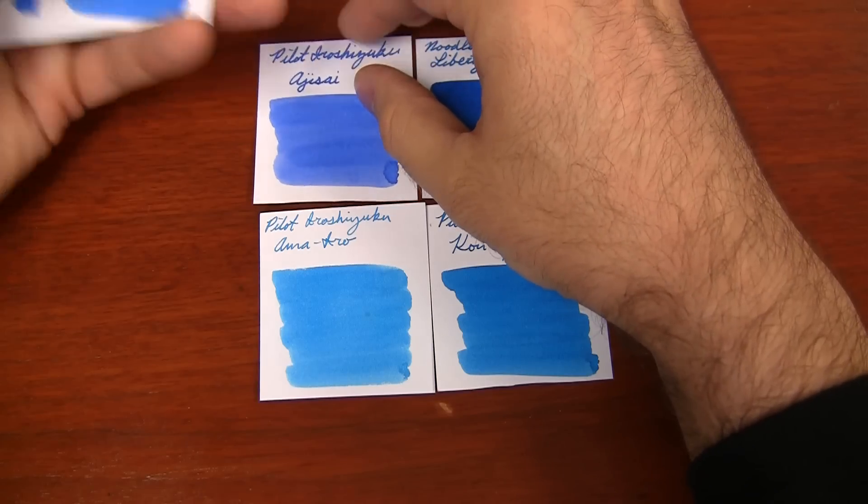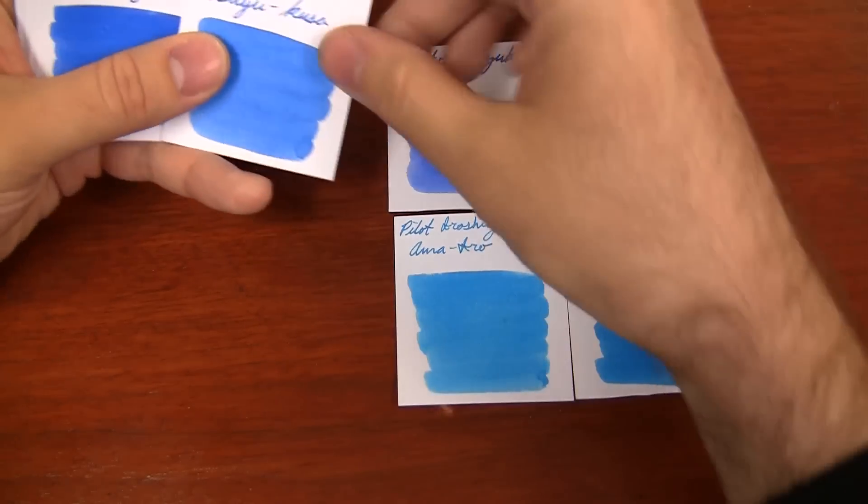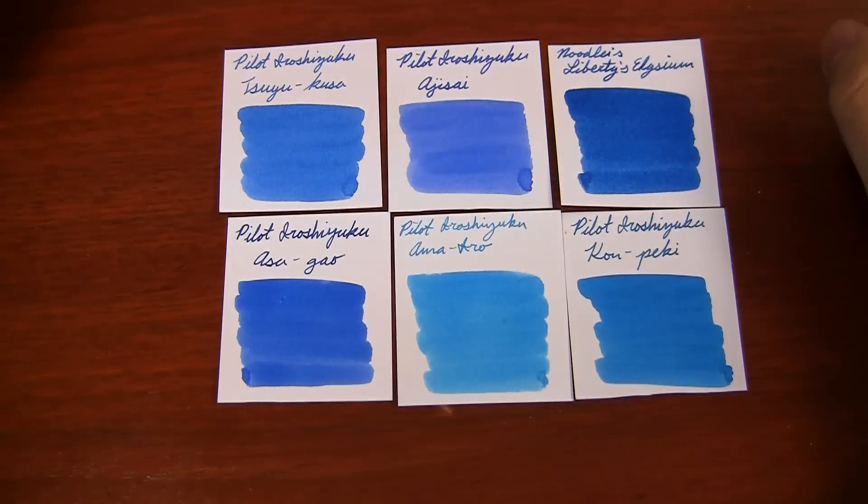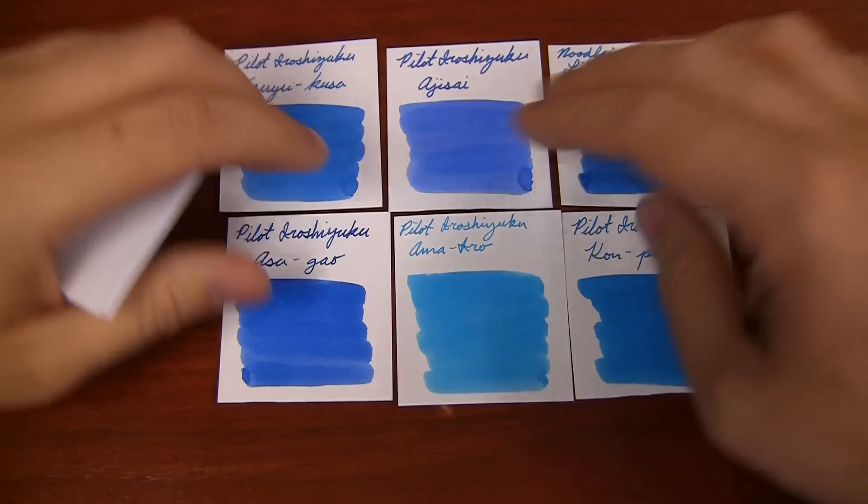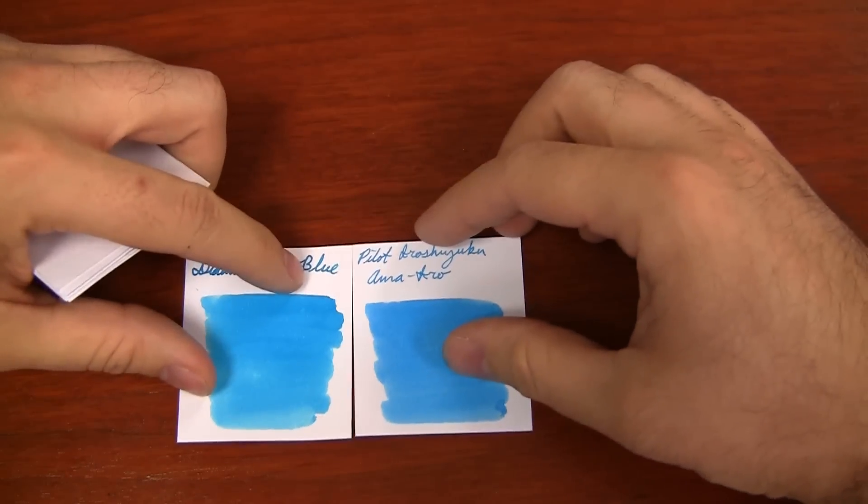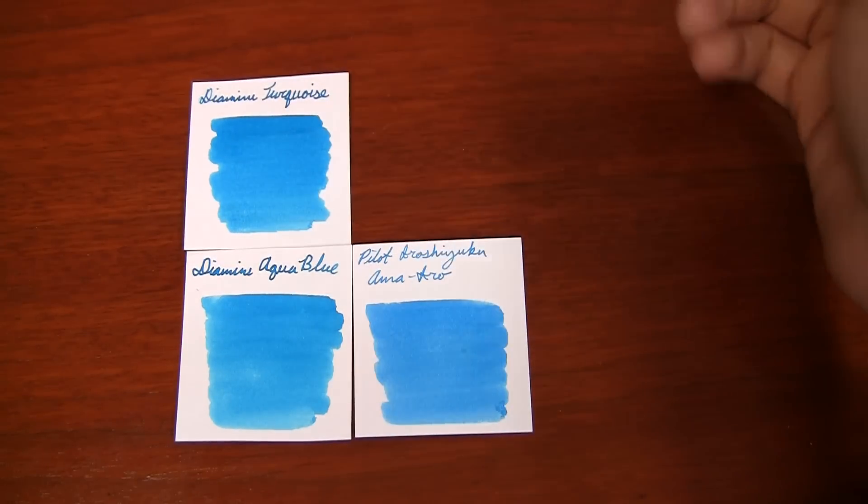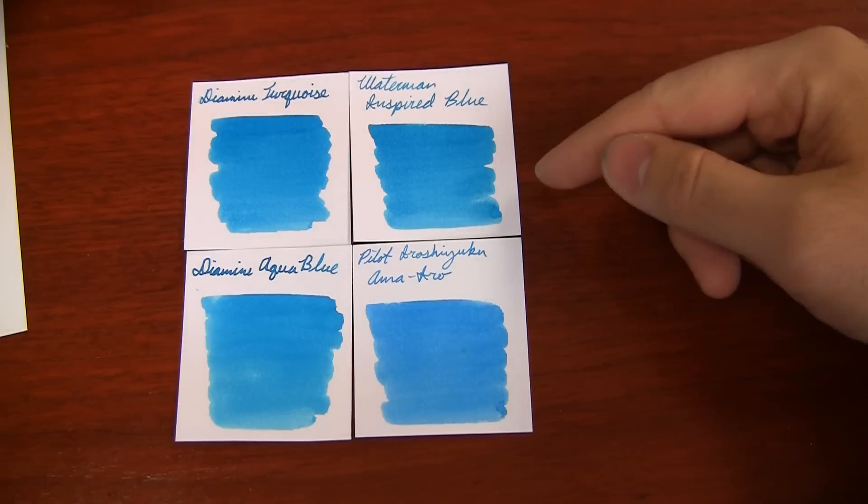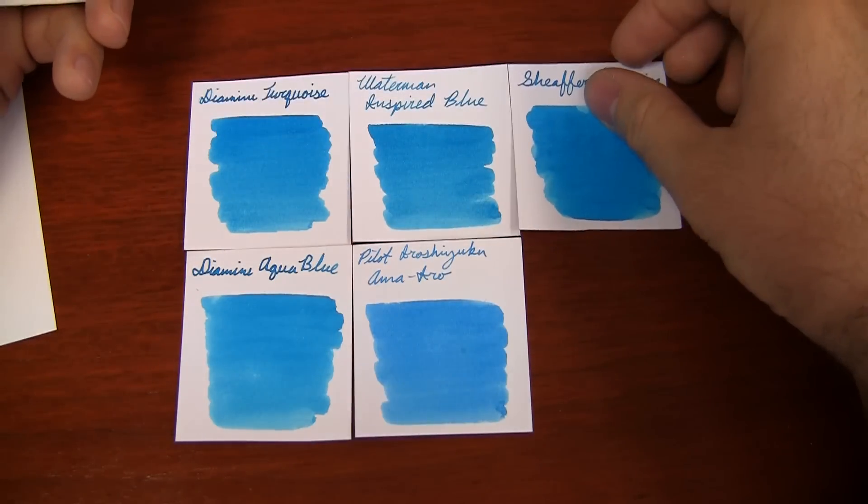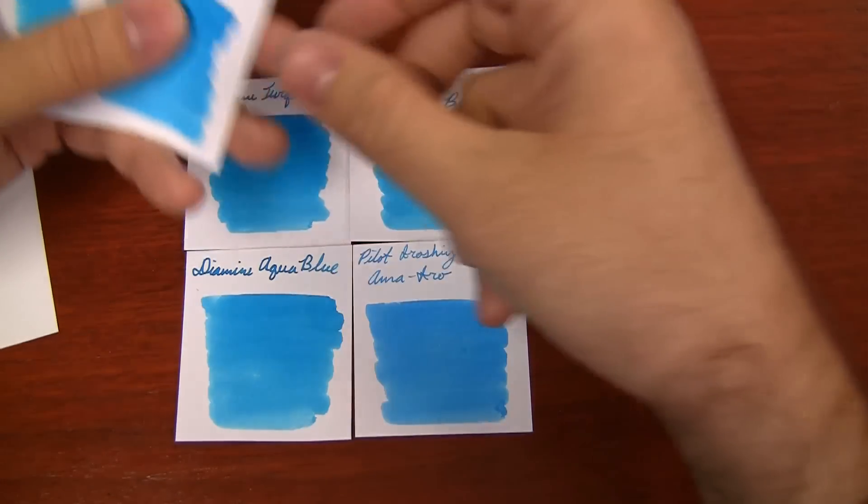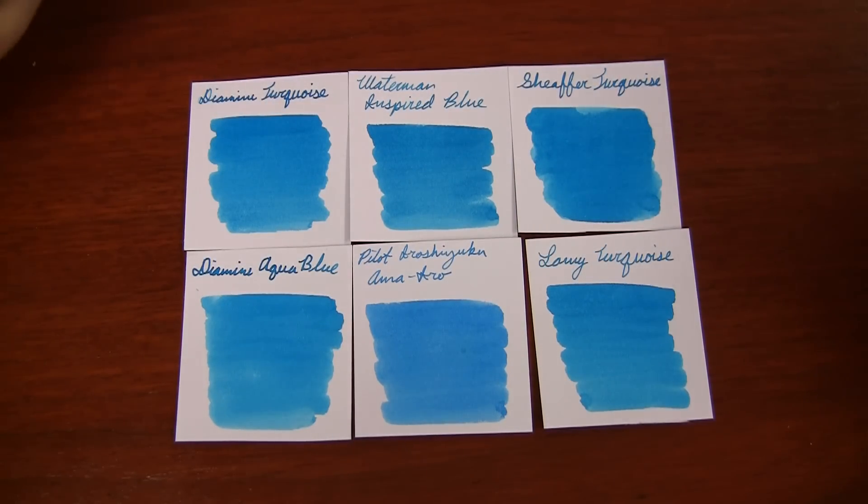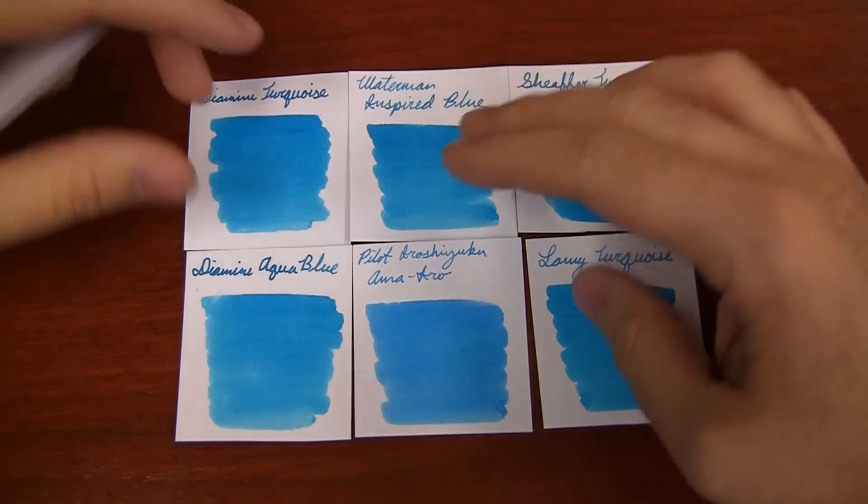Some other ones I thought you would want to see are some of the other Iroshizukus. So I've got Ajisai, Suyukusa, and Azagao. And when you see Ama Iro compared to those ones, you realize how purple these other ones really are. Ama Iro has no purple to it, no green to it, it's just a very true kind of blue turquoise color. Some of the other ones I had that are kind of comparable to it, Diamond Aqua Blue is a little bit darker, it's got a little more green to it. Diamond Turquoise, same kind of thing, it's very similar to Aqua Blue but more saturated. Waterman Inspired Blue, which used to be South Sea Blue, that may be how you know it. That one has a little more green to it as well, not quite as a true blue as Ama Iro. Schaefer Turquoise, same thing, you're noticing a trend, a lot of these ones look really similar. Lamy Turquoise, again, right in that same vein. You'd notice that a lot of turquoises out there have a heavy green component to them. Ama Iro is one of the only ones I've seen that has very little green, it's very much of a true blue.